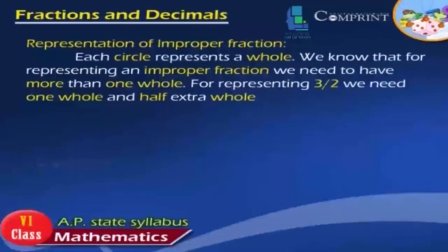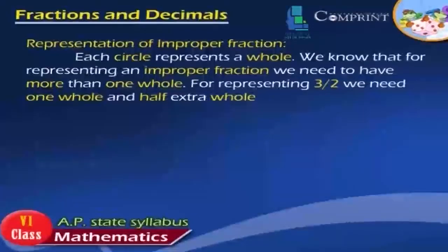Representation of Improper Fraction. Each circle represents a whole. We know that for representing an improper fraction, we need to have more than one whole. For representing 3 by 2, we need one whole and half extra whole.